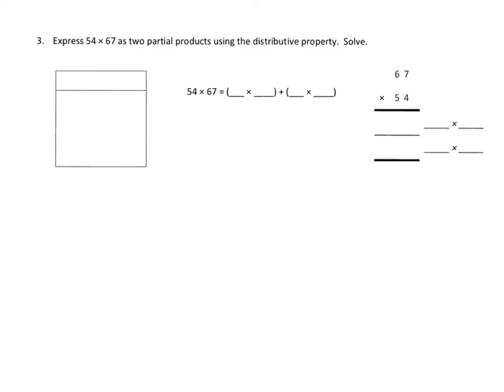What they're talking about here with the distributive property is the way that we can do partial products to multiply each part of 54 with 67. Let's take a look at our area model and decide how we would represent it. We could look at 54 and break that down into two pieces — 50 plus 4 — and then across the top we could say that's 67. So we could think of 54 times 67 as being two pieces: 4 times 67, and 50 times 67. That's using the distributive property, because we've broken down 54 into its pieces, 4 and 50, and multiplied each by 67.